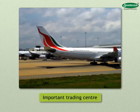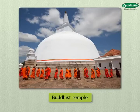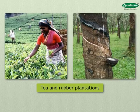This city is situated in the southern mountainous region and is a hill station. The Buddhist temple here is very famous, and there are tea and rubber plantations in this region.